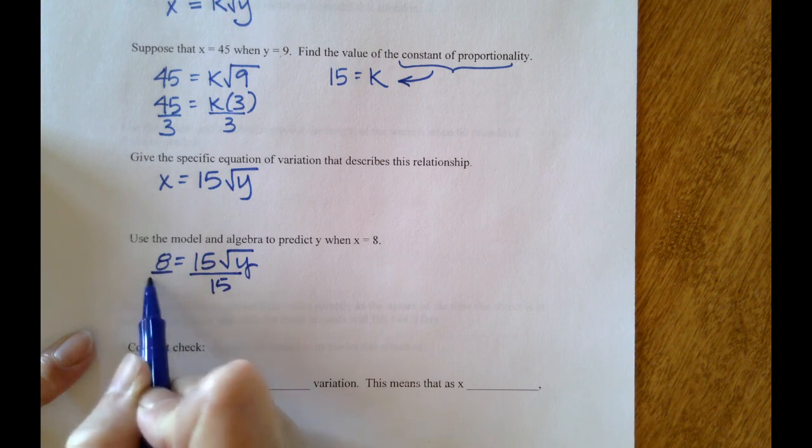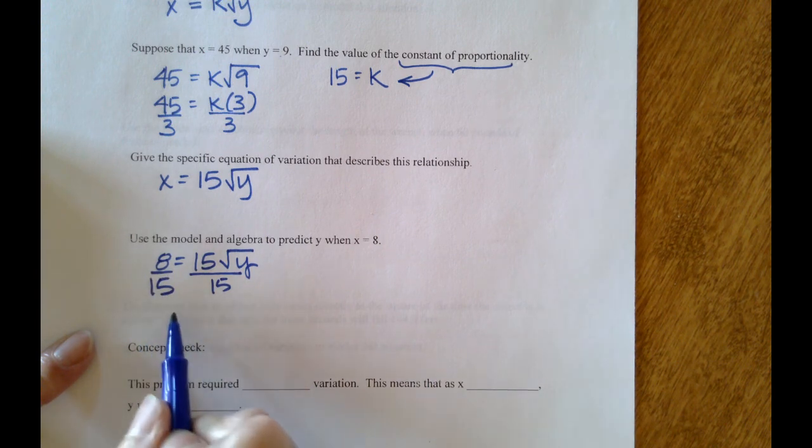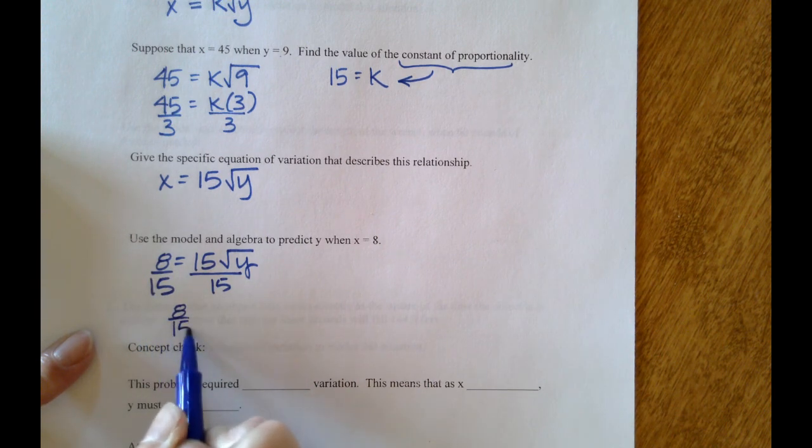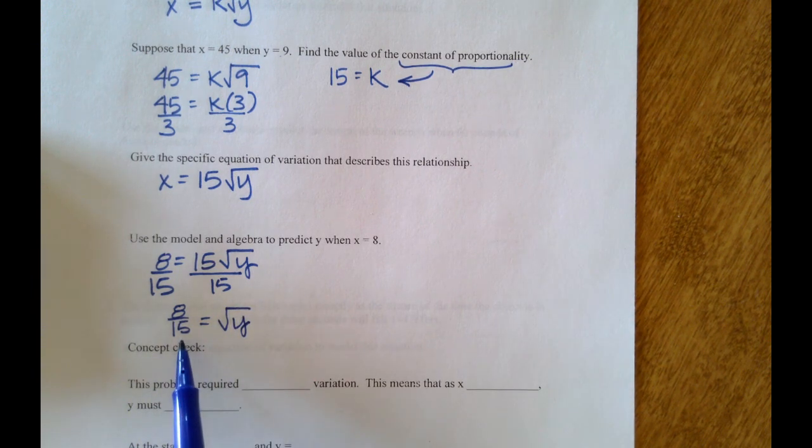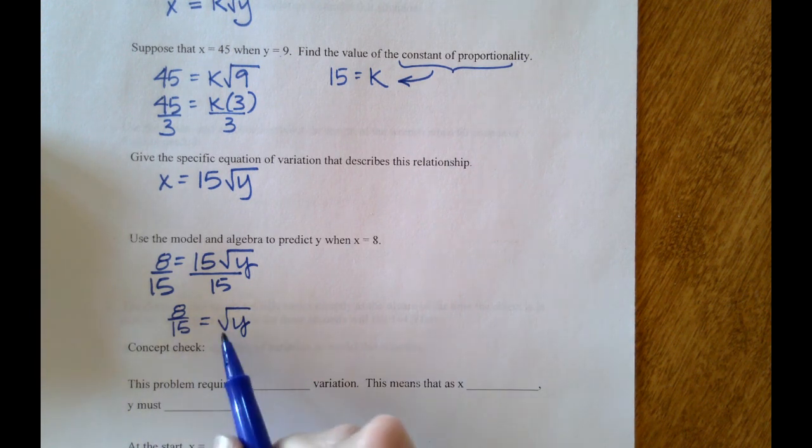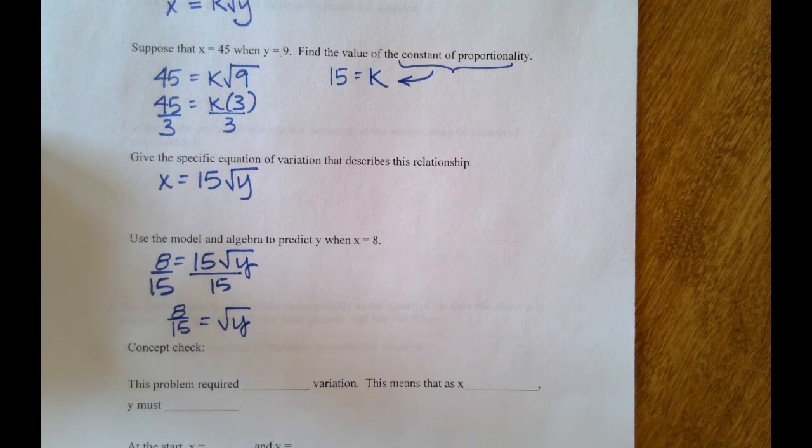Divide both sides of your equation by 15. 8/15 equals the square root of y. Go ahead and leave that in fraction form. To get y all by itself, we will square both sides of the equation.